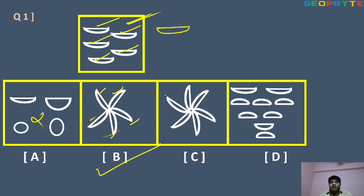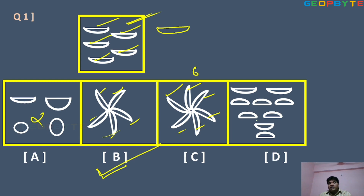In option C, the number of semi-circles is six, but we had only five, so option B is the right answer. In option D, more than five semi-circles are existing, so that is also wrong. This type of question is what we encounter here.